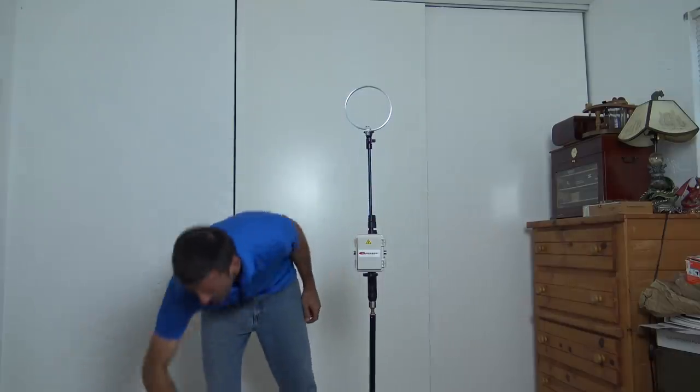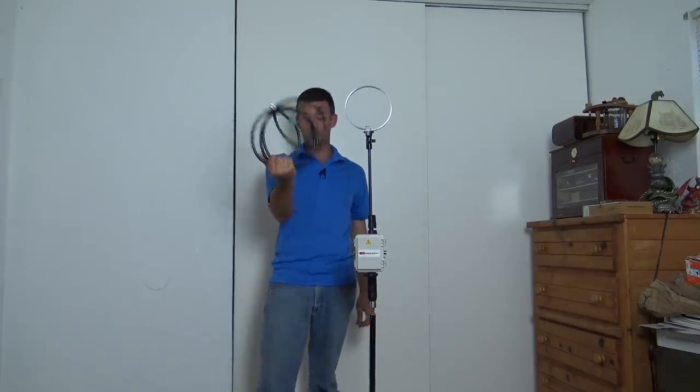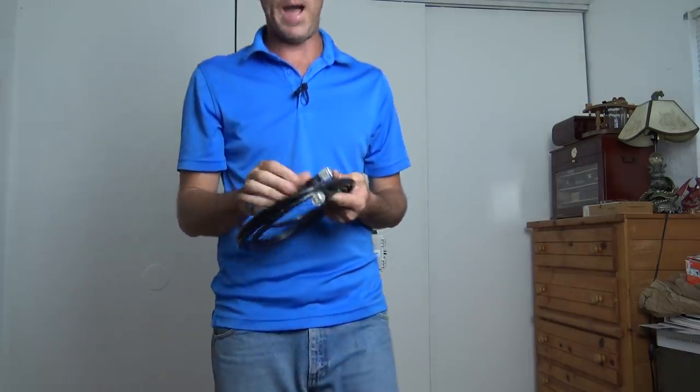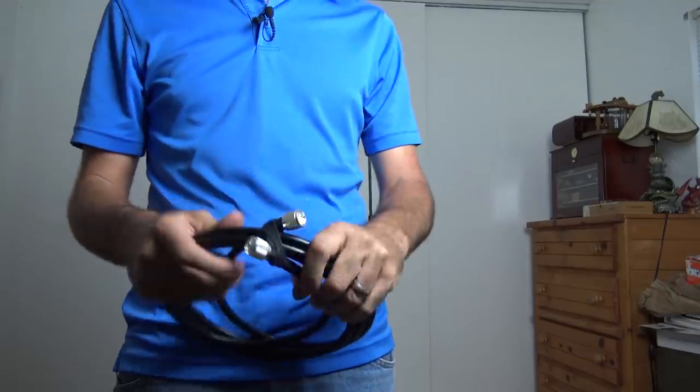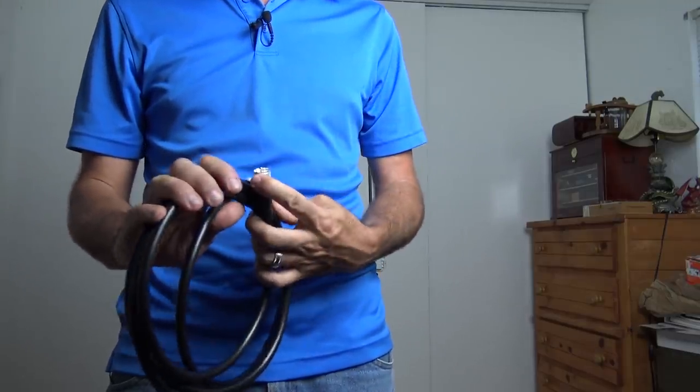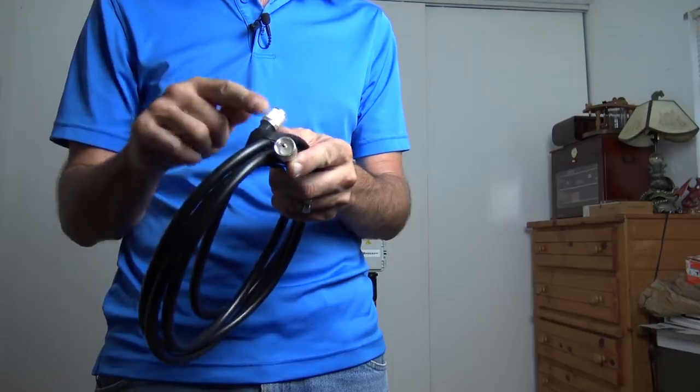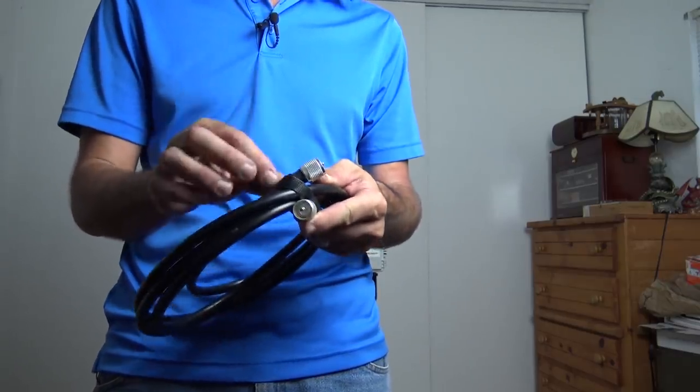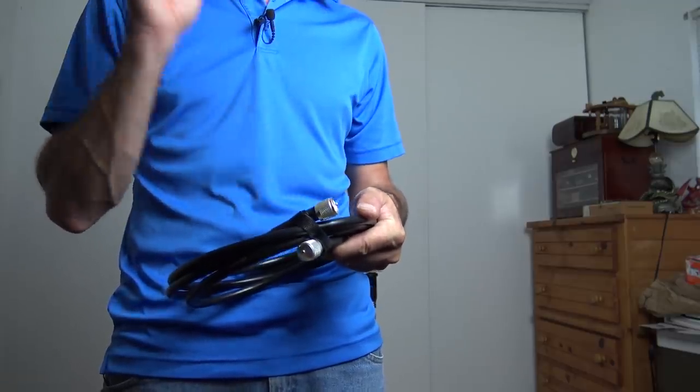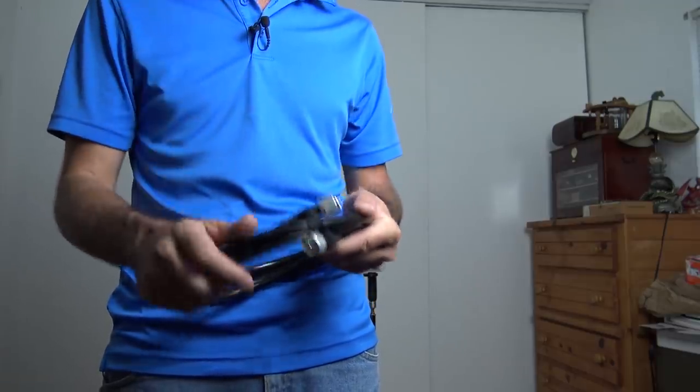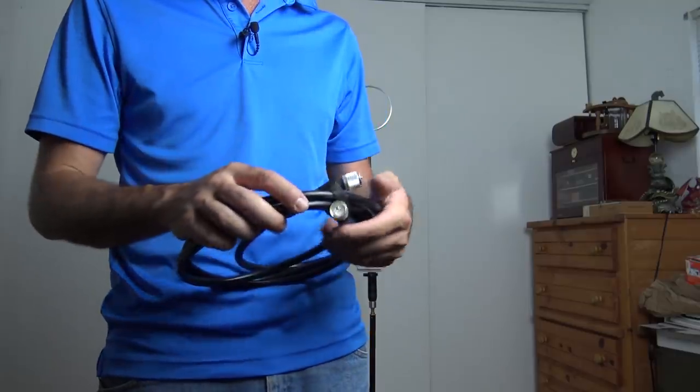So we have that there. Now the next part is your loop. This is essentially LMR 400 coax. It's very rigid.